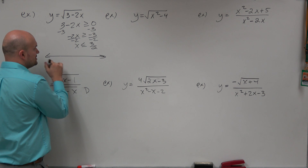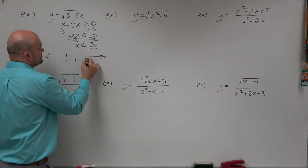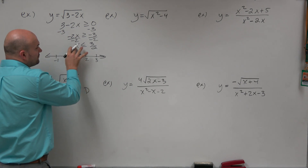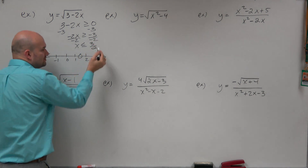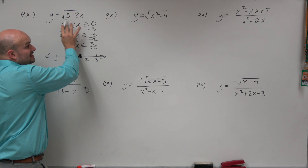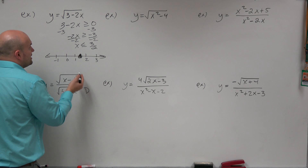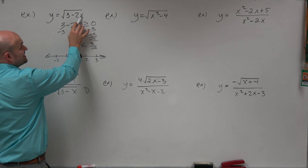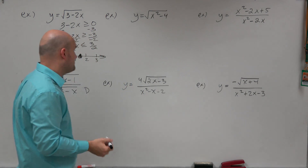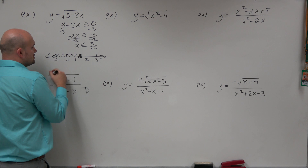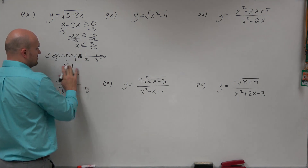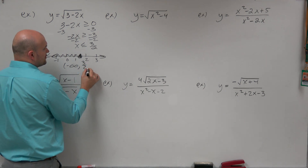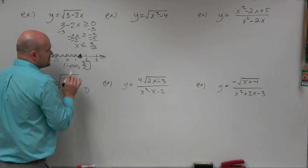To write the domain in interval notation, I'm going to create a number line: 0, 1, 2, 3. And 3/2 is the decimal equivalent 1.5, so it's right here. For the domain to be satisfied, x has to be less than or equal to 3/2. It can equal 3/2 because plugging in 3/2 gives you 0, and you can take the square root of 0. But anything greater than 3/2 makes that value negative — for instance, plugging in 3 gives 3 minus 6, which is negative 3. So the domain continues down to negative infinity, and we write it as negative infinity to 3/2, using a parenthesis for negative infinity and a bracket for 3/2 since it is included.